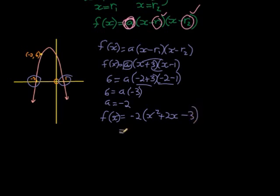And then we find negative 2x squared minus 4x plus 6. Here we go.